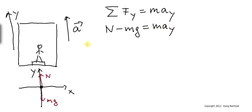I can solve this for the normal force. The normal force, which is the reading of the scale, is then m*ay plus mg. I can factor out the m to get m times (ay plus g).